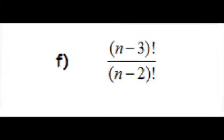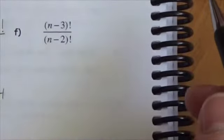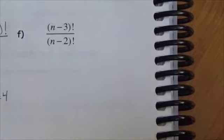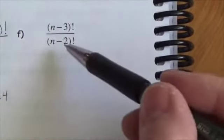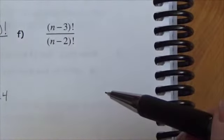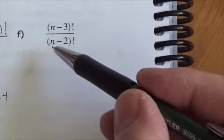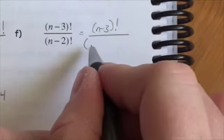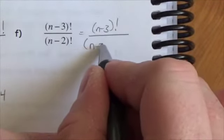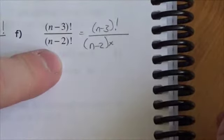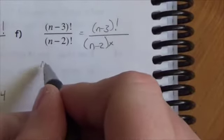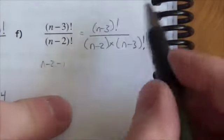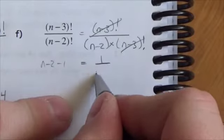Now: (n minus 3) factorial divided by (n minus 2) factorial. Be careful — which is larger, n minus 3 or n minus 2? Even though 3 is larger than 2, we're subtracting, so n minus 2 is actually larger. Expand the denominator: (n minus 2) times (n minus 3) factorial, over (n minus 3) factorial. Those cancel, leaving 1 over (n minus 2).